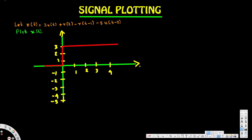The second term is r(t), the ramp function. It starts at 0 when t = 0 and has a slope of 1, so the graph goes upward linearly from the origin.